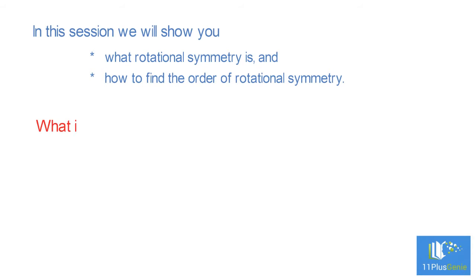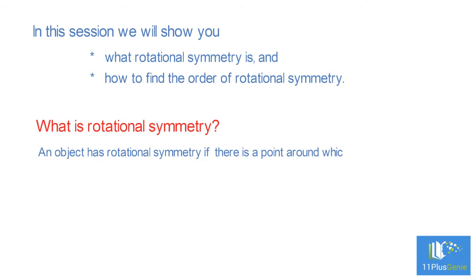What is rotational symmetry? An object has rotational symmetry if there is a point around which the object is turned, rotated, a certain number of degrees and the object looks the same.